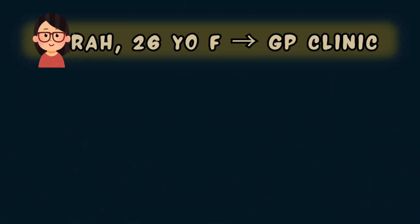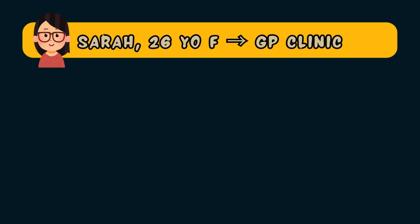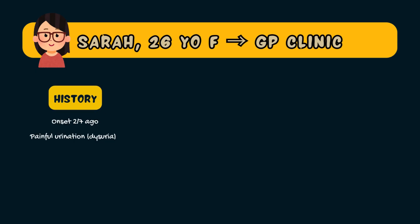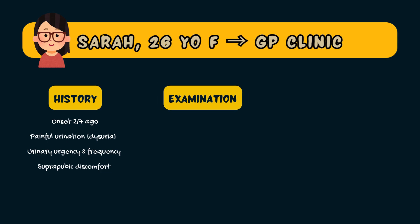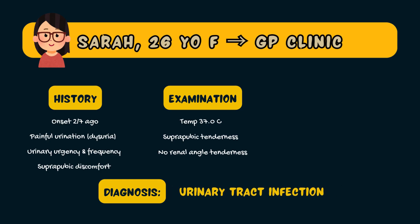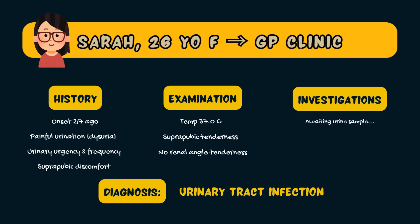Meet Sarah, a 26-year-old female who presents to the GP clinic with painful urination for the past two days. She also reports the urge to pee every 20 minutes and discomfort in her lower abdomen. She is normally well and has no other symptoms. On examination, Sarah has a temperature of 37 degrees and she has some suprapubic tenderness. She has no renal angle tenderness. You are concerned that Sarah might have a urine infection and you ask her to provide a urine sample so you can test it.